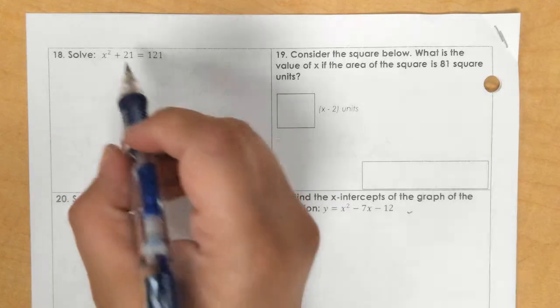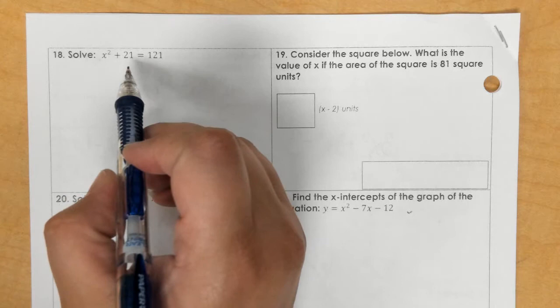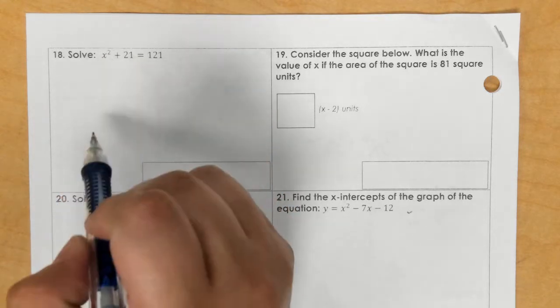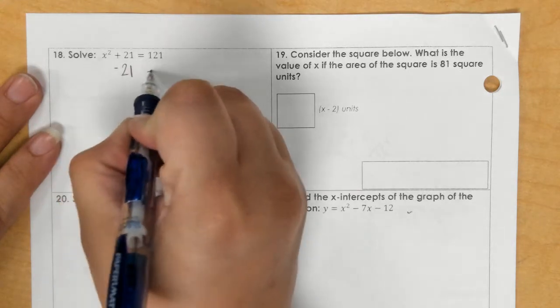For number 18, I'm going to solve this like an equation and then take the square root at the end to get rid of the exponent. So first, I would subtract 21 from both sides.